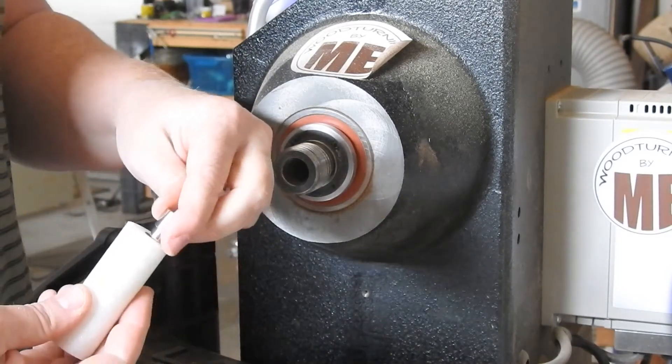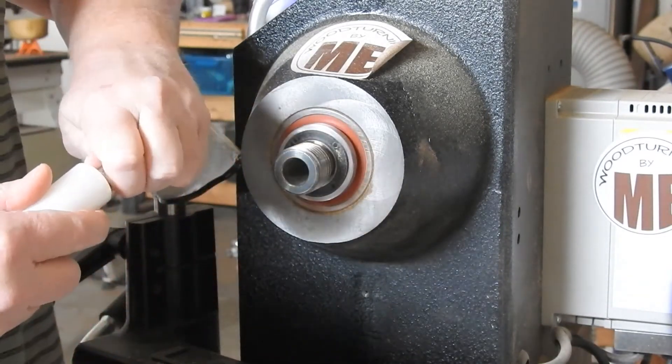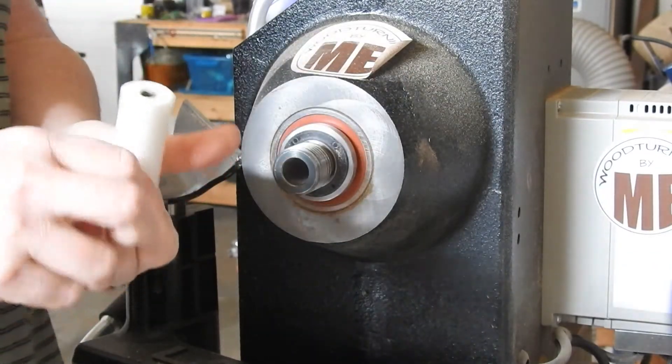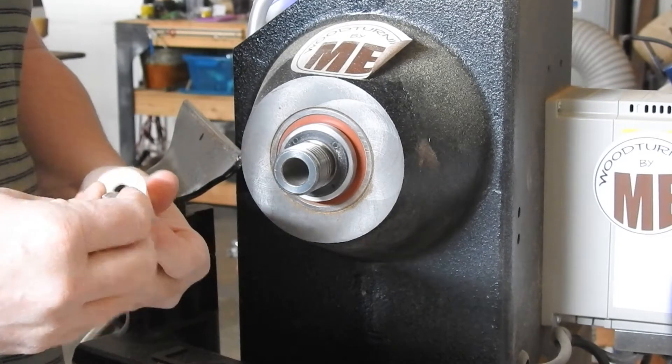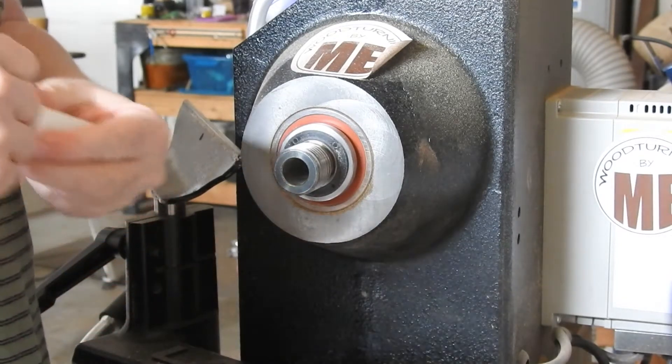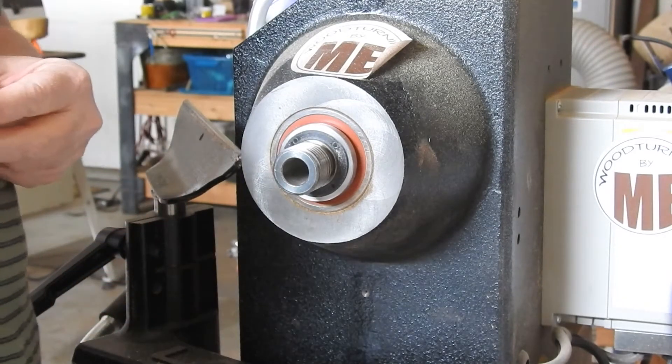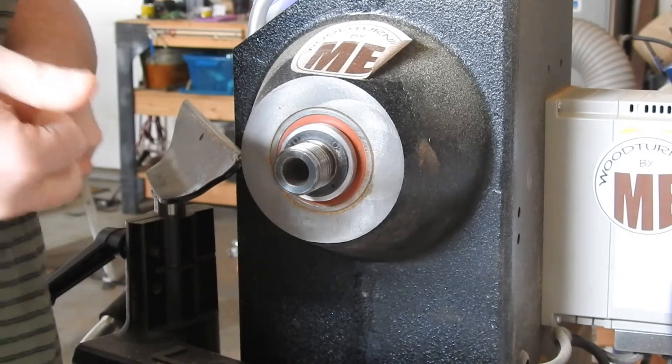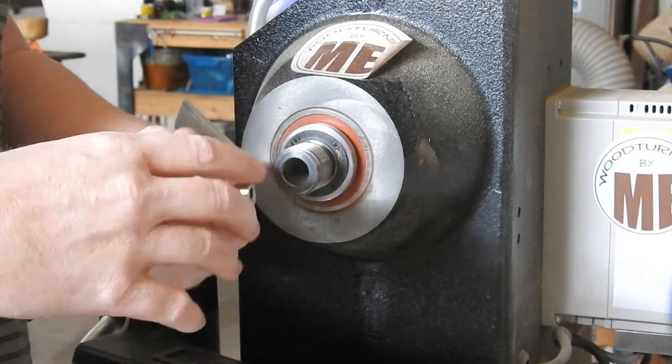Here I'm putting the bushings into the ends of the tube to put it on the mandrel. Apparently I got a little glue in the tube because it was a bit difficult to get the bushings in the tube. Yay, I did it!